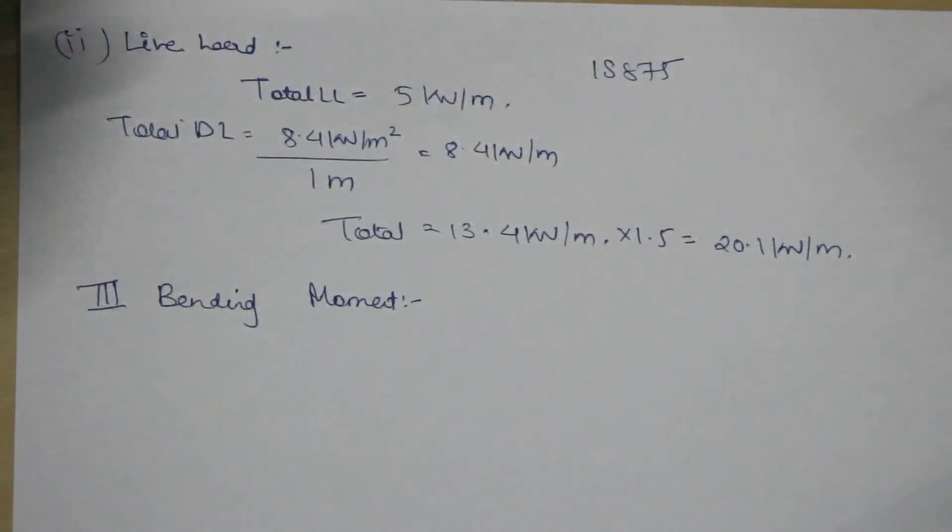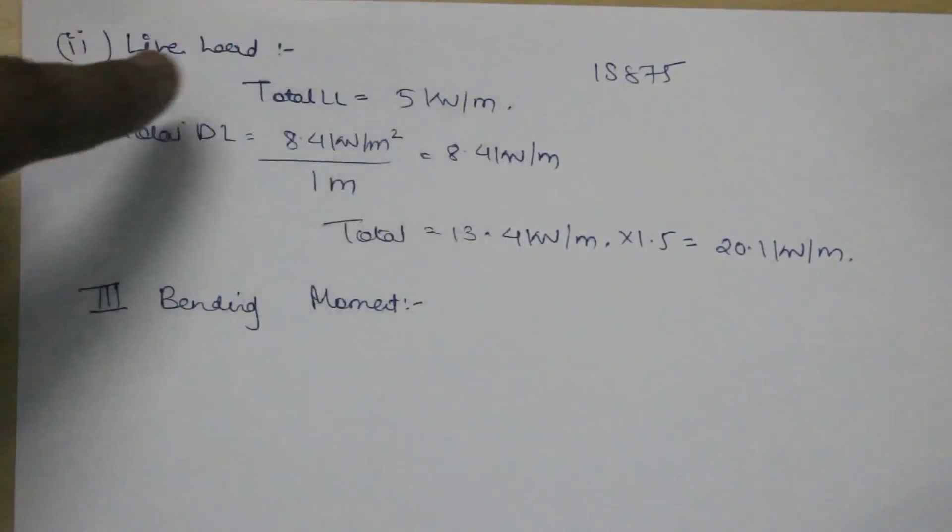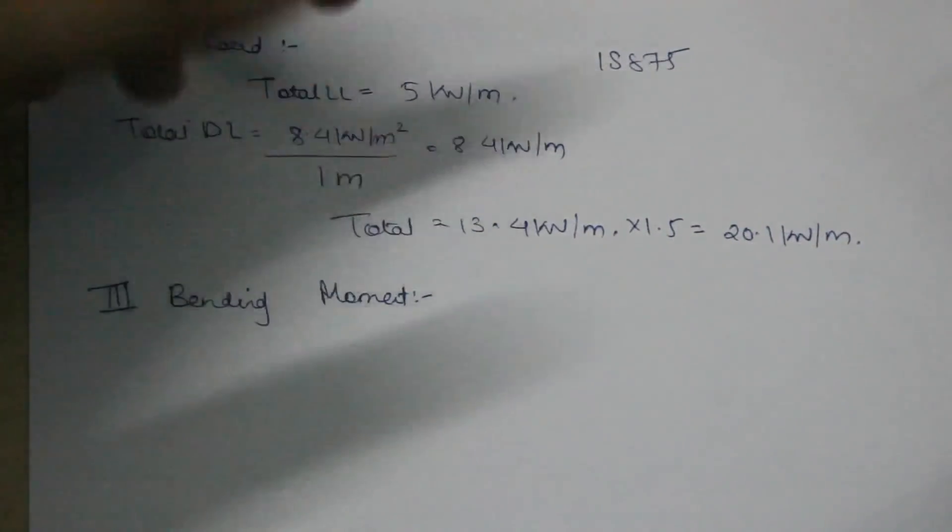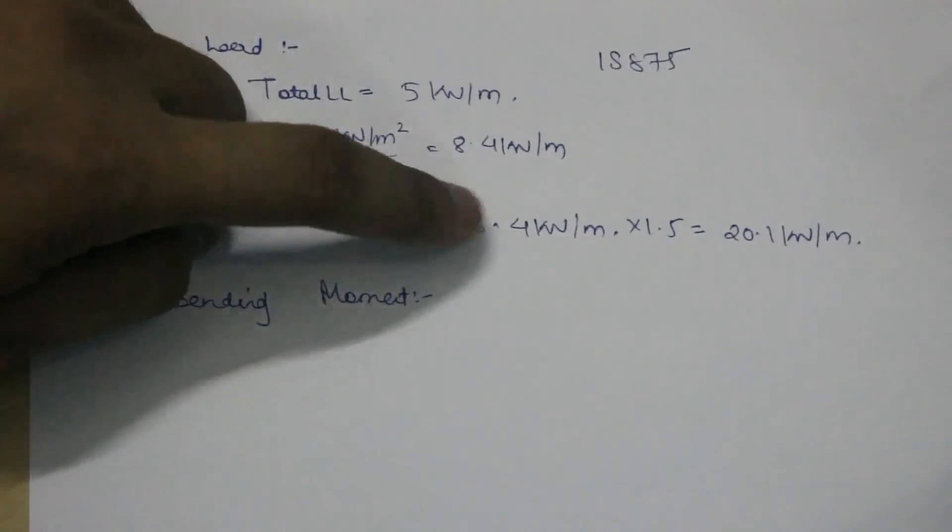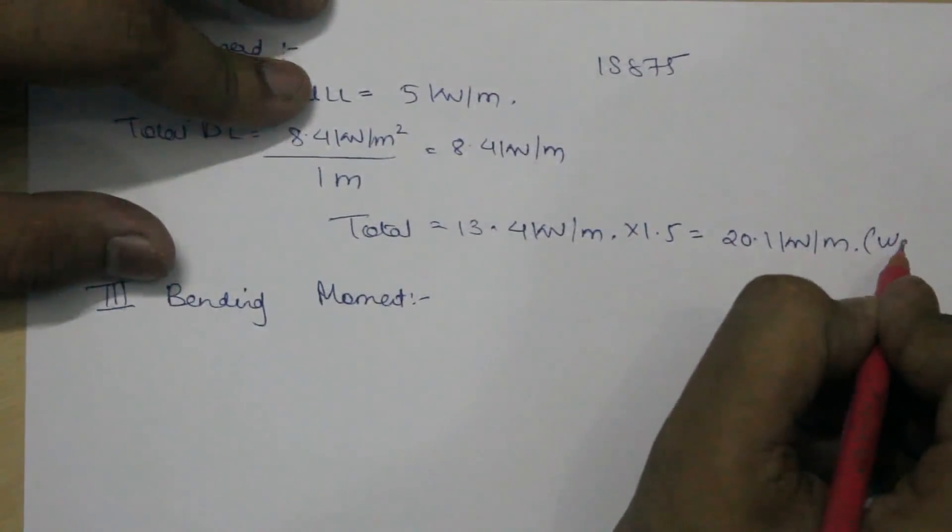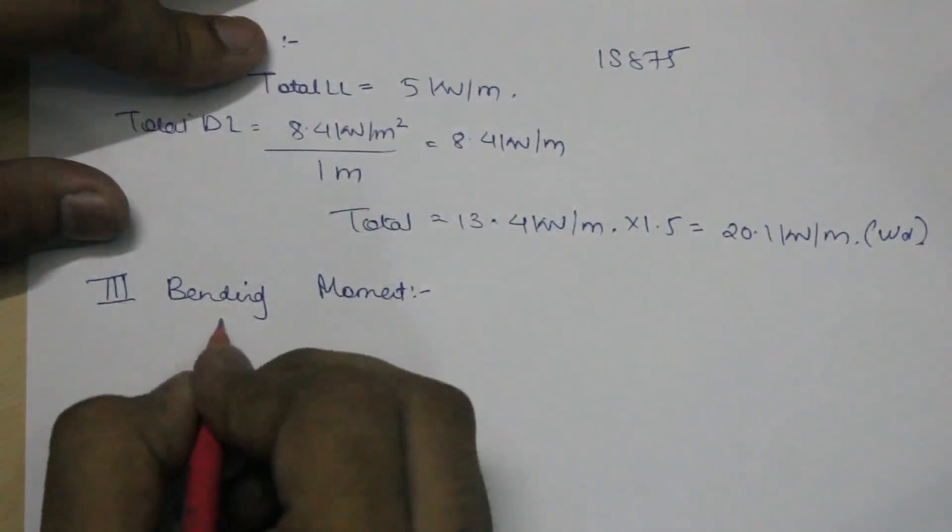The second type of load is live load. You can take the value of live load from IS 875 which gives various values of loads, live loads, dead loads, wind loads, snow loads, etc. I'm assuming it as 5 kilonewton per meter. The total dead load was 8.4 kilonewton per meter square. I'm dividing it by 1 meter because for designing slabs we assume the load to be acting per meter width of the slab. The total load would be 13.4 kilonewton per meter, and I multiplied it by 1.5 because we want the factored load. This is the factored load wd. Once you get the load, you can calculate the maximum bending moment.